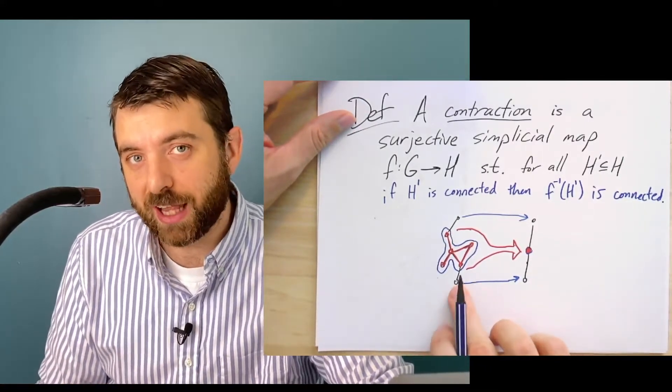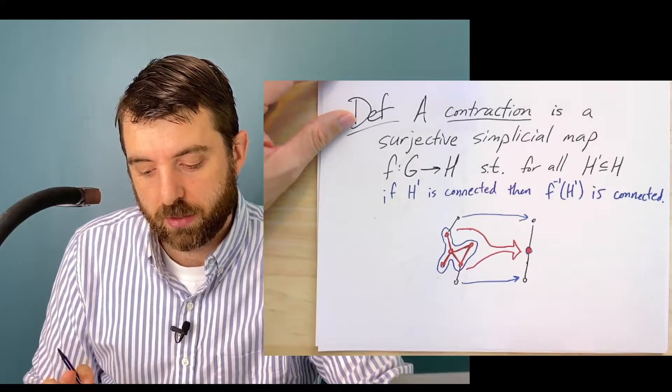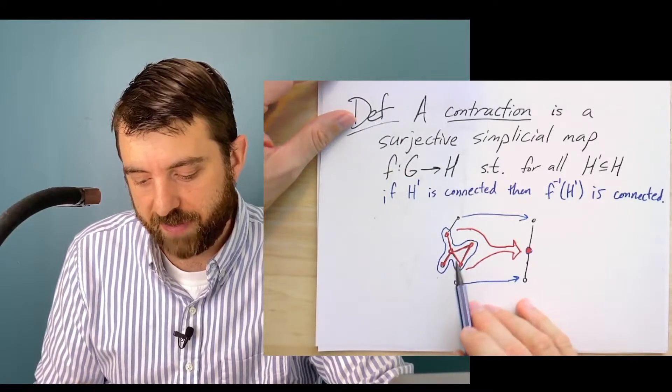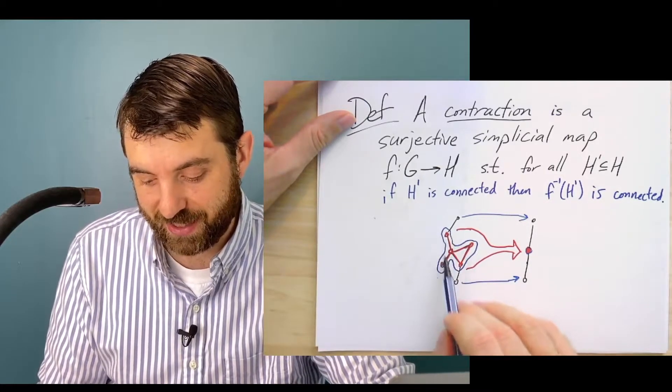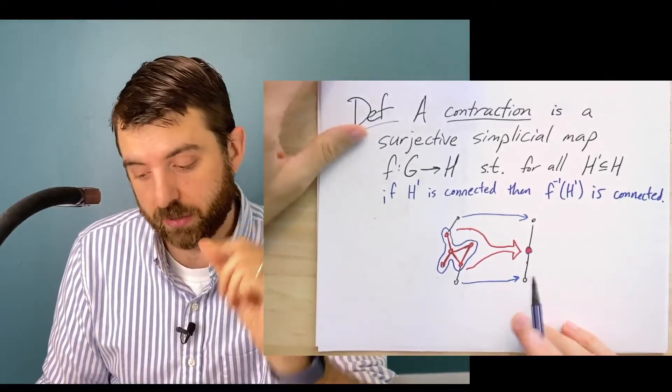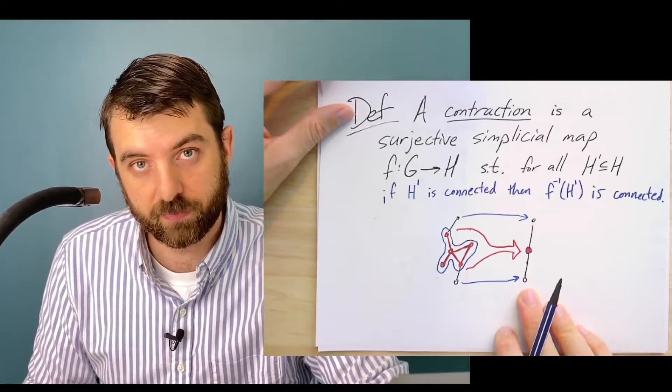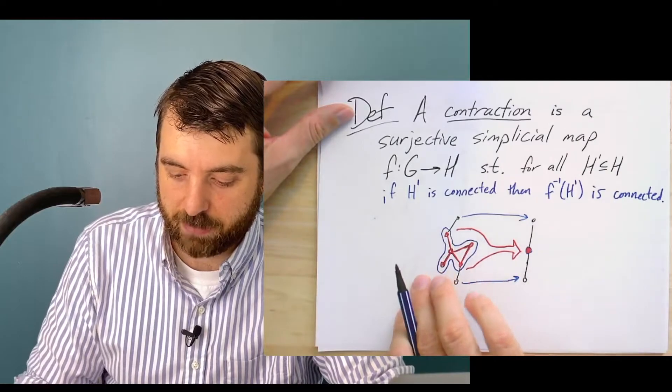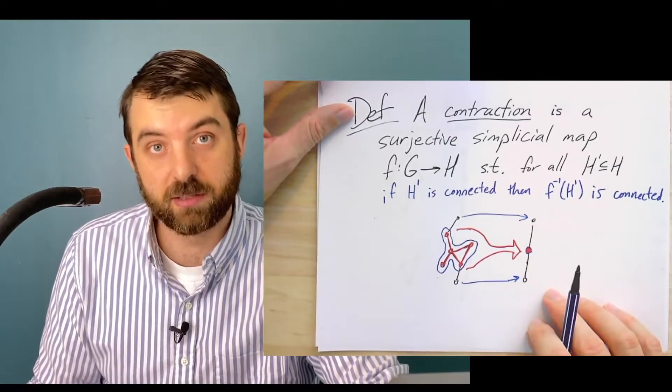We could realize this simplicial map by a sequence of edge contractions. And in fact, it's pretty clear what those edge contractions would be. All of the edges in this subgraph, if we contracted them one by one, we would end up with a graph isomorphic to this graph on the right.